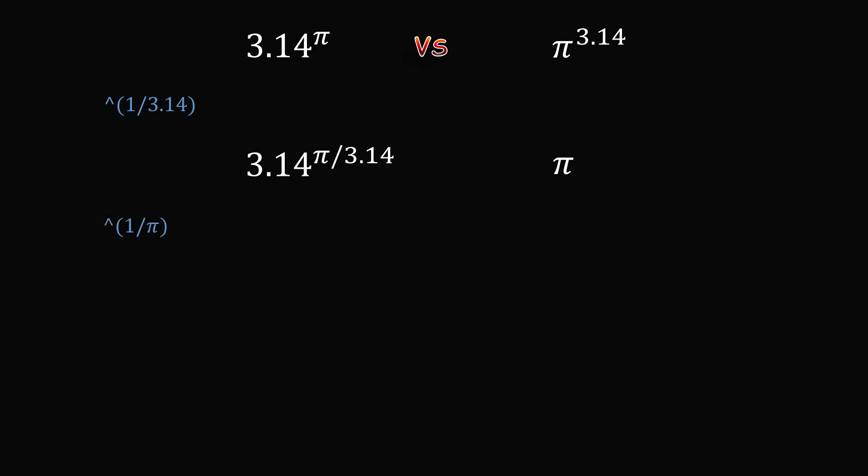Let us now raise both numbers to the power of 1 over pi. Again, this will not change the direction of the inequality. The left number will become 3.14 to the power of 1 over 3.14, and the right hand number will be pi to the power of 1 over pi.